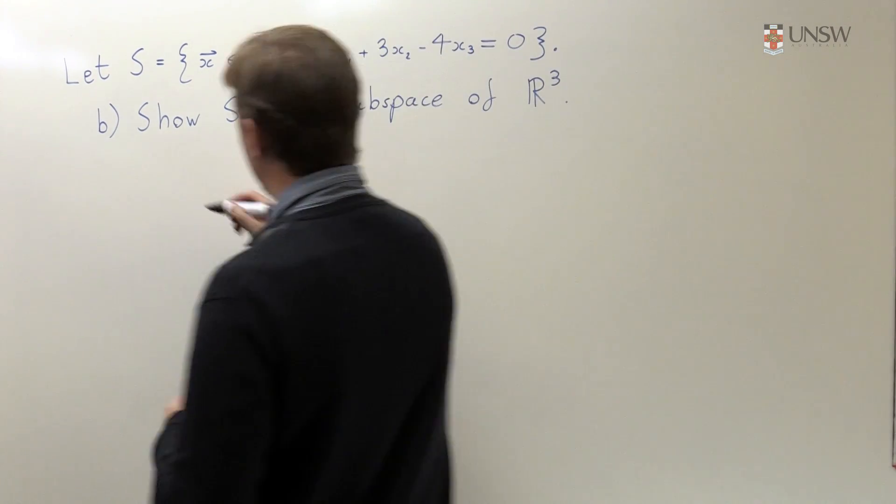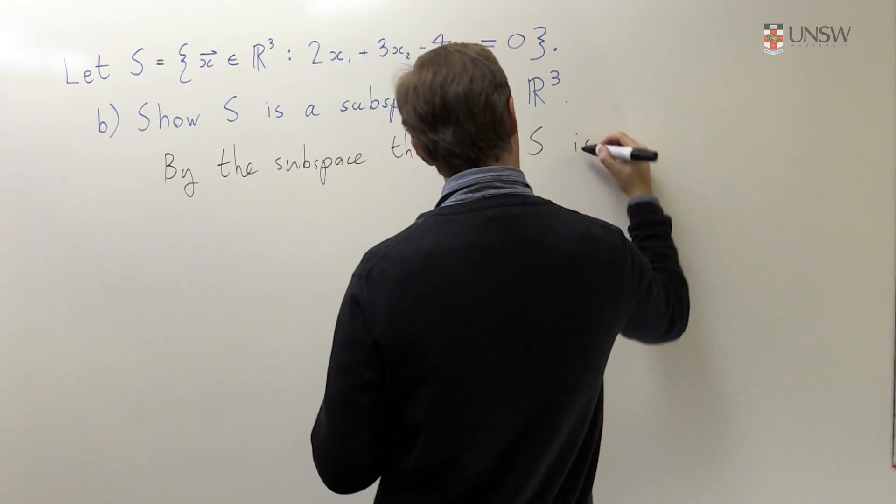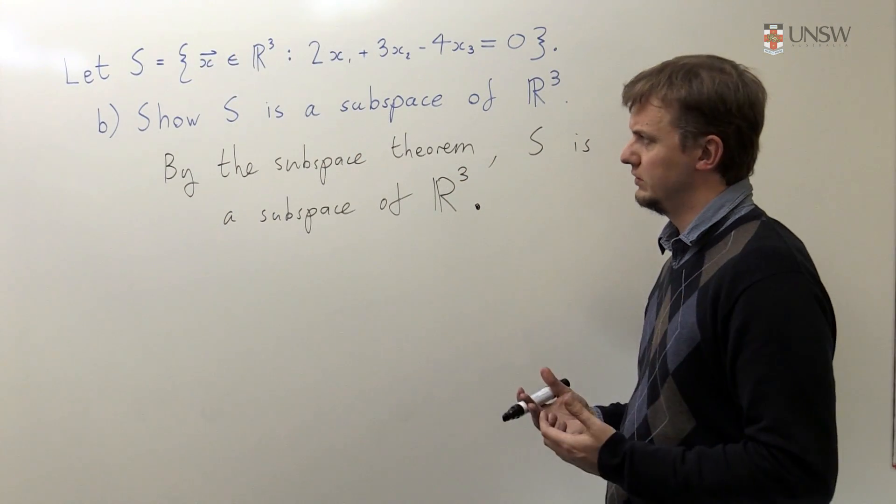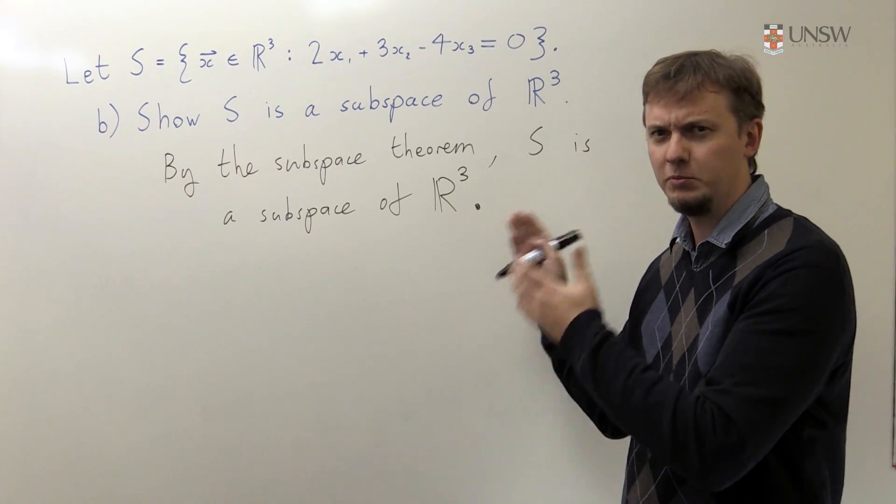Now there's one more thing I really think you have to do to really tie this all together, is to make the conclusion that by the subspace theorem, S is a subspace of R³. If you think about it, all we've done is show three very special properties. It's really the subspace theorem which does the rest of the work and tells me that this really is a subspace of R³.